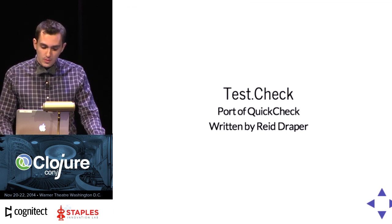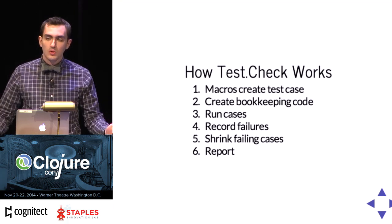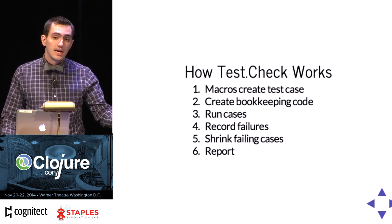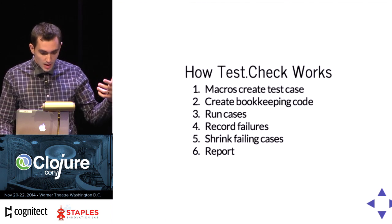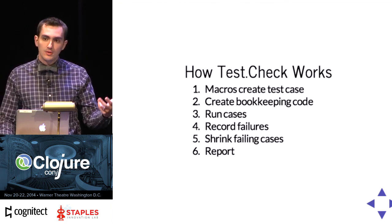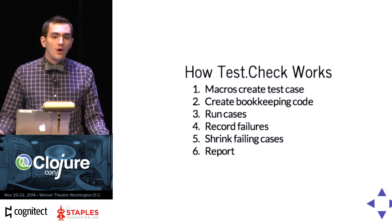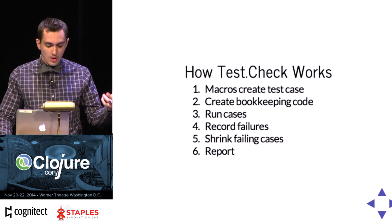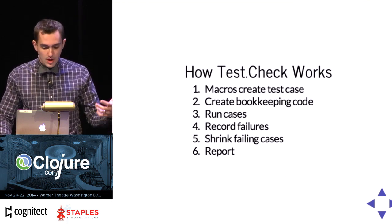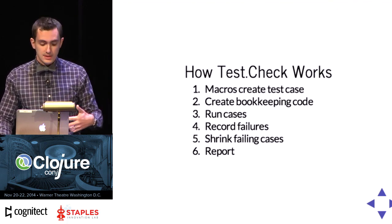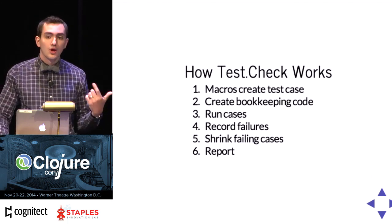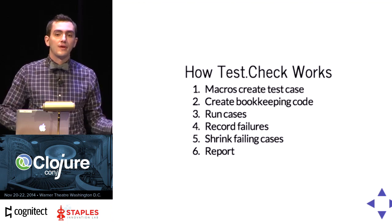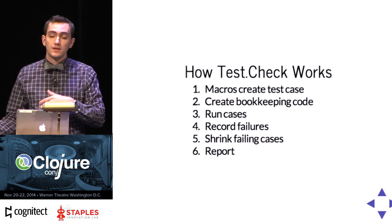As a high-level overview: basically, the way you work with test.check — a macro creates a clojure.test case for you, creates all the bookkeeping code to keep track of recorded failures, runs the cases with all of the generated stuff that you asked for, records the actual failures and successes, then shrinks those back down, running your code again, and reports to you whether it passed or failed. If it failed, it tells you what is the first failing case and the smallest failing case it found.